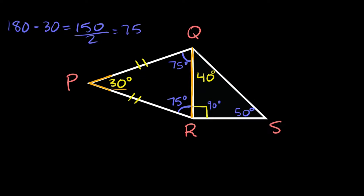Now the shortest side on the right triangle again comes from the smallest angle, so that would be 40 degrees in this case. So this would be angle Q up here and this angle opens up to the opposite side from R to S.